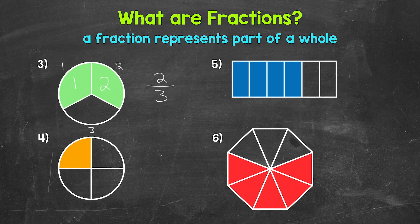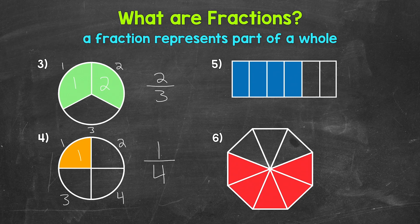Let's move on to number four. How many equal parts has the whole been divided into? One, two, three, four. So four is our denominator. Now we need how many equal parts have been shaded — one. So that's our numerator. Our fraction is one over four, which we say one fourth. One out of four parts are shaded.